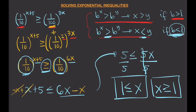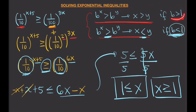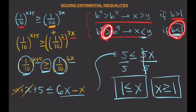That's how you solve exponential inequalities — it's basically just like solving exponential equations, but you need to remember these rules. If b is greater than 1, just copy the direction of the inequality. If b is less than 1, invert it: greater than becomes less than, and less than becomes greater than. And that's it — see you in the next video.